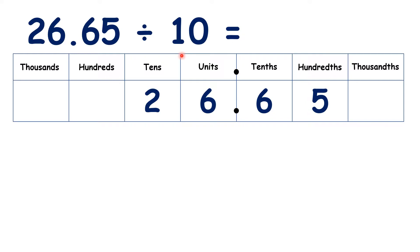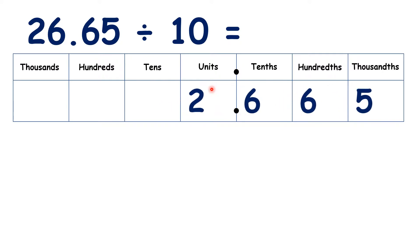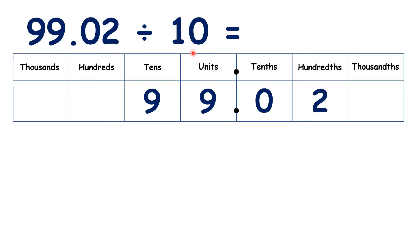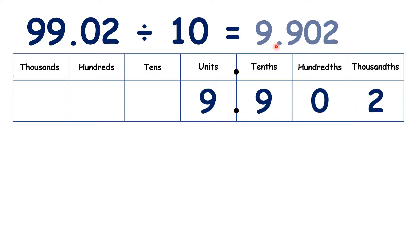For 26.65 divided by 10, we move the digits, so we have 2.665. For 99.02 divided by 10, we move the digits and we have 9.902. Remember, this 0 is important — we can only ignore a 0 if it's on the end of a decimal number, not if it's between other digits.